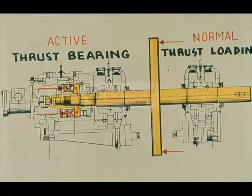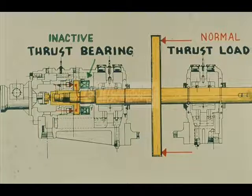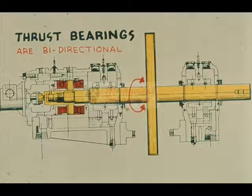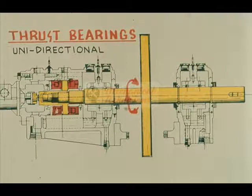The bearing carrying the thrust load during normal operation of the machine is called the active thrust bearing. The bearing unloaded during this period of operation is known as the inactive thrust bearing. Some thrust bearings are designed to run with a thrust collar that may rotate in either a clockwise or counterclockwise direction — these bearings are said to be bi-directional. Other thrust bearings are unidirectional, meaning they are designed to run with a thrust collar that turns in only one direction.